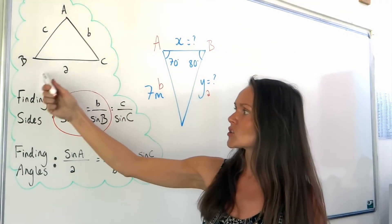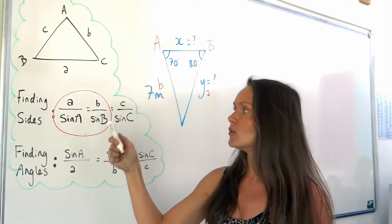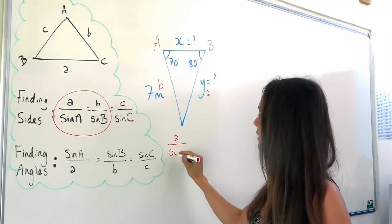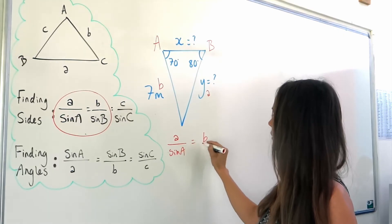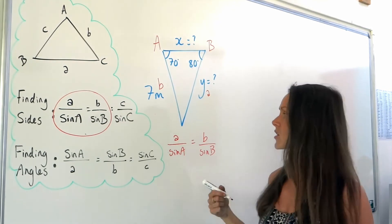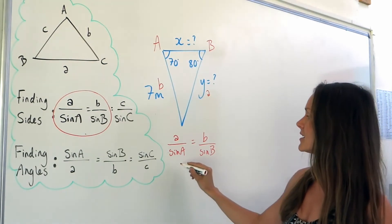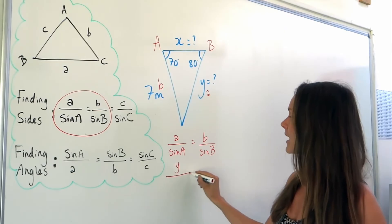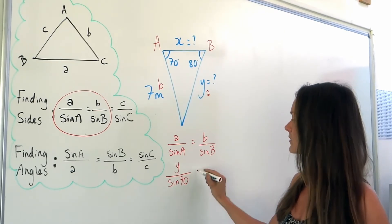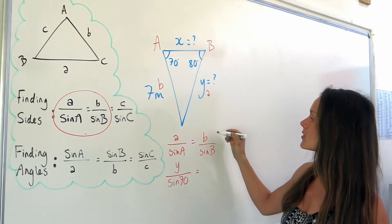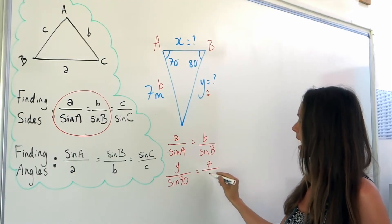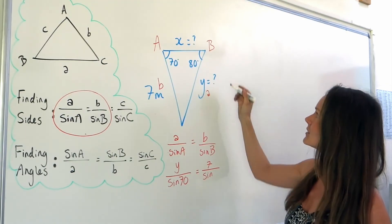We're finding a side, so we want the sides-on-top version of the sine rule, using A and B. Substituting in: side A equals Y, angle A is 70 so I write sine 70. Side B is 7 metres, and angle B is 80.